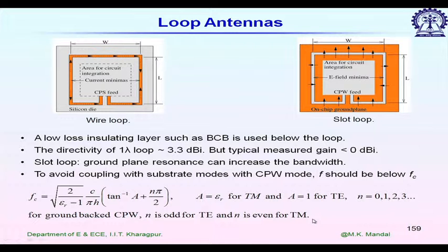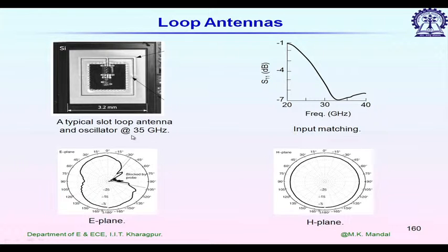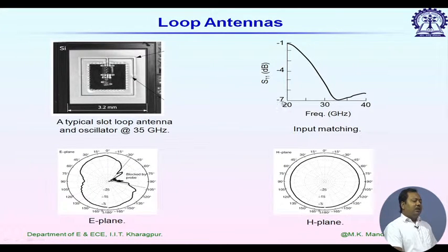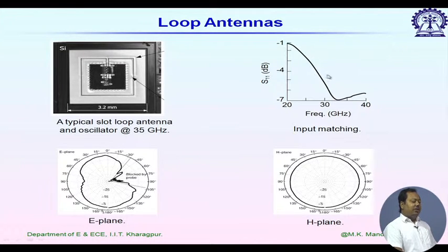This is a fabrication example from IBM designed for 35 GHz applications. The typical dimension left to right is 3.2 millimeters. You can identify the antenna structure: a slot loop fed by a CPW line, with a ground plane resonance. Looking at the S11 plot, bandwidth is quite high. We cannot even achieve minus 10 dB input impedance matching, but for handheld device applications, 3 dB matching bandwidth is sometimes enough. The bandwidth is quite wide due to the ground plane resonance.